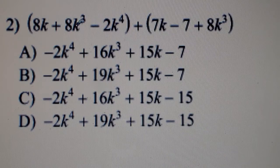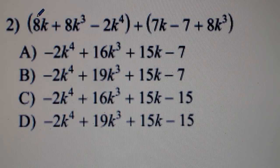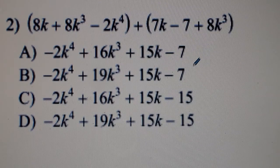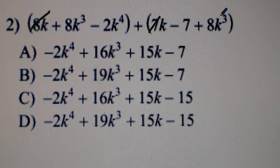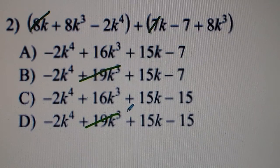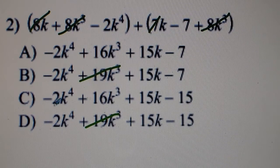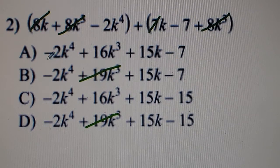For problem 2, we have 8k + 8k³ − 2k⁴ added to another polynomial. 8k matches up with 7k, so 8k + 7k gives 15k. For the k³ terms: 8k³ + 8k³ gives 16k³ — not 19k³, so that eliminates choices B and D. Negative 2k⁴ — all remaining choices have that. Then plus a negative 7, which is really minus 7, not minus 15. So the answer to number 2 is A.